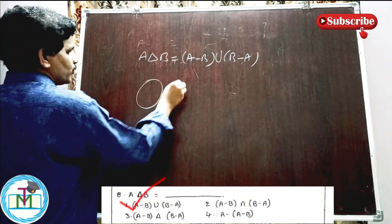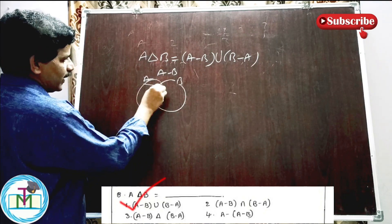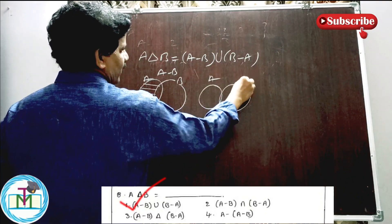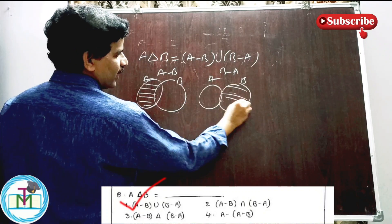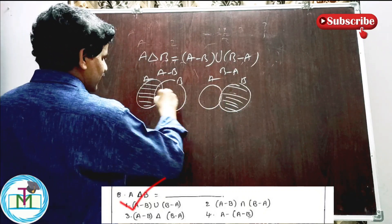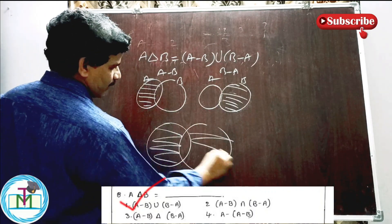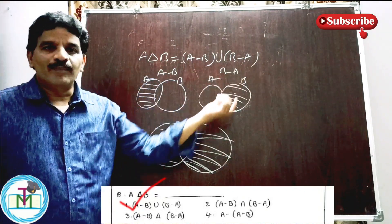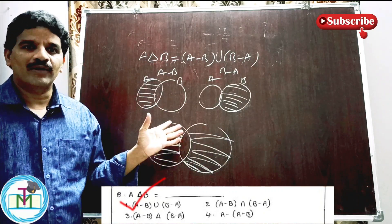Looking at the Venn diagram of A and B: A minus B contains elements that belong to A but don't belong to B. B minus A contains elements that belong to B but not A. The symmetric difference A delta B is the union of these two non-overlapping regions, excluding the intersection.